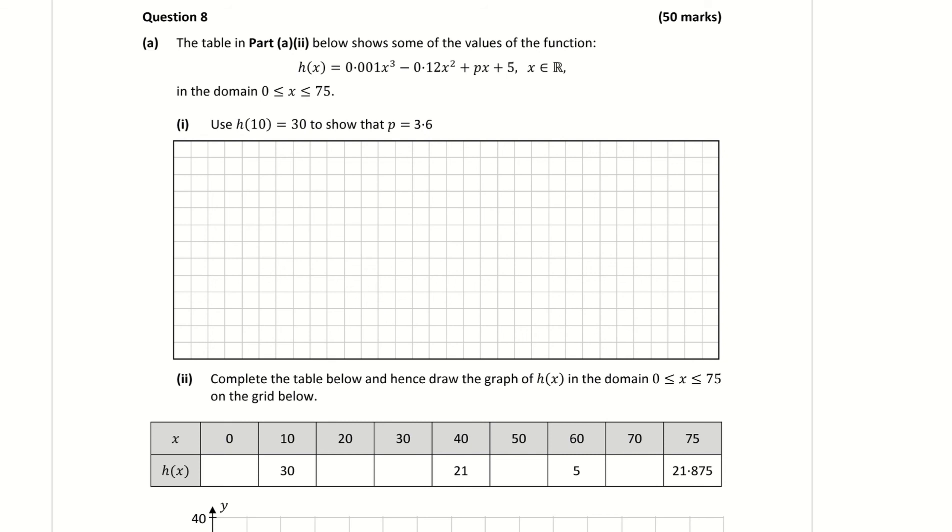Question 8a. The table in part a, part 2 below shows some of the values of the function h of x in the domain 0 to 75. Part 1: use h of 10 equals 30 to show that p is equal to 3.6. This one is basic enough. Basically all they're getting us to do here is sub in 10 for our x and letting it equal to 30.